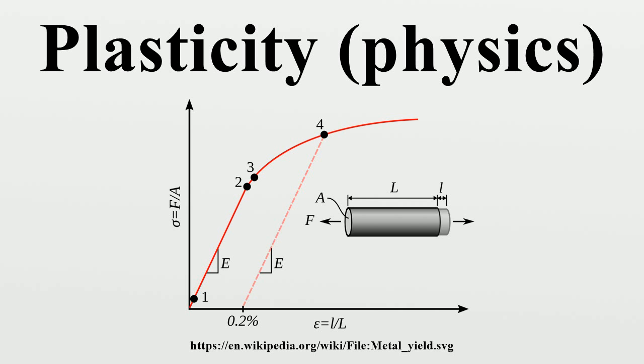Flow plasticity theory: In 1934, Egon Orowan, Michael Polanyi, and Geoffrey Ingram Taylor roughly simultaneously realized that the plastic deformation of ductile materials could be explained in terms of the theory of dislocations.